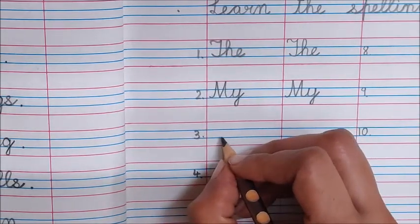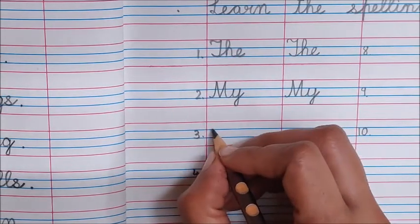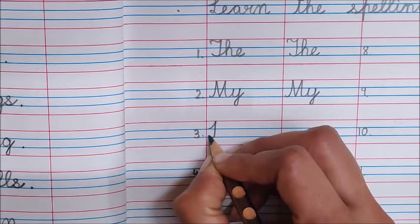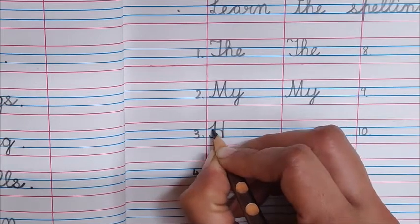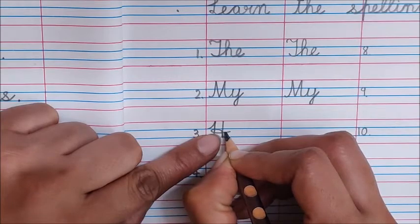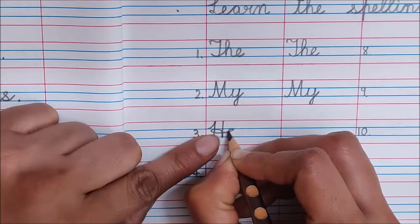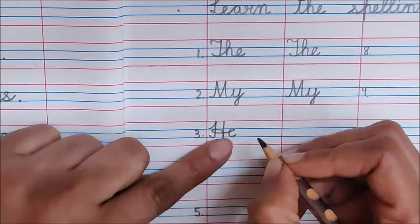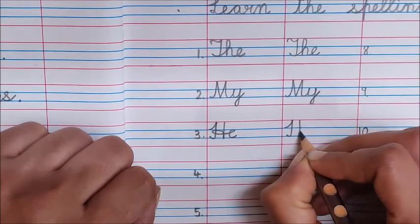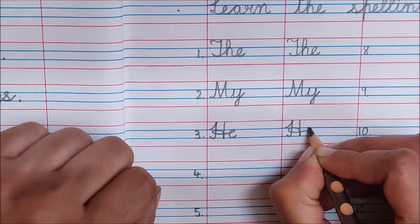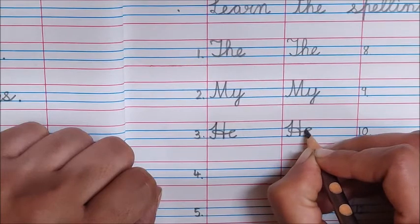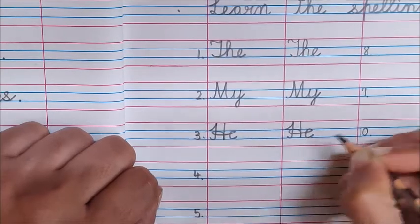Next word is He. H-E He. Begin this also with capital cursive H. Now see children, I have taken out this tail. Now I am going to turn and make it E. H-E He. H. Now this line I am going to turn behind. See I have made a loop behind and now I have made E.